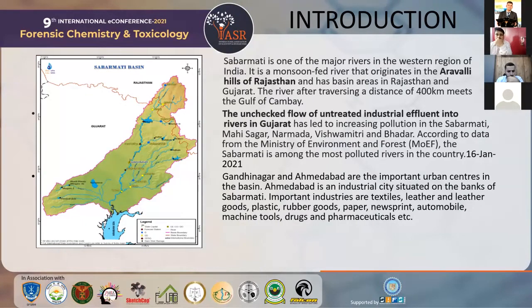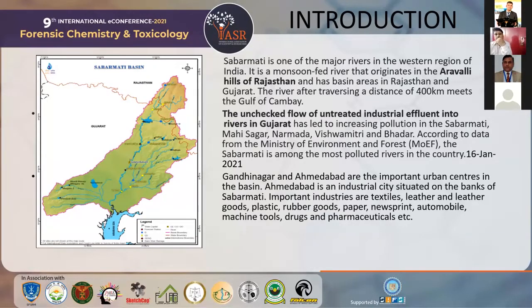This is an image collected from Google Maps. The Sabarmati basin is divided into two parts: the first part is in the Rajasthan district, and the second is in Gujarat. So basically, the Sabarmati river starts in the Aravalli hills of Rajasthan and then passes into the Gujarat basin, finally reaching the mid-to-day curve of Cambay.